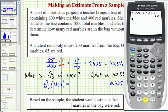And notice how 0.425 times 1,000 will give us the same result: 425. So this would be the student's estimate for the total number of red marbles out of the 1,000 marbles.